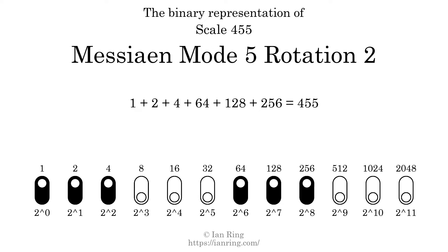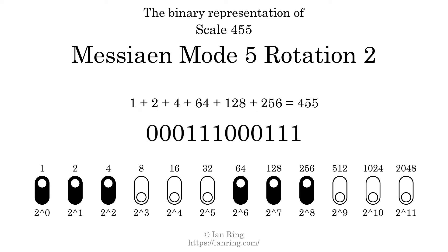That is why the scale number, in decimal, is 455. The scale number not only enumerates the scale with a unique index, but it also literally describes the tonal content of the scale, represented as a binary number in base 2.